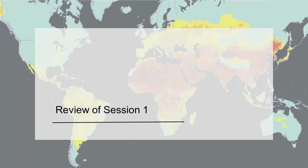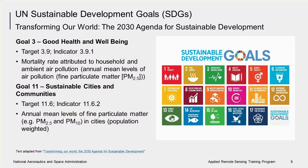First, we'll begin with a brief review of some relevant topics from session one. The Sustainable Development Goals, or SDGs, are an initiative by the United Nations and are part of the UN 2030 Agenda for Sustainable Development, which was adopted in 2015. They contain a set of 17 aspirational global goals and 169 specific targets, covering a broad range of issues. Goal 3 and Goal 11 specifically address the need to reduce air pollution. According to a WHO report, air pollution is responsible for one in every nine deaths, or about 3 million people annually. PM2.5 is most commonly used as an indicator of air pollution exposure — it is particulate matter with an aerodynamic diameter of 2.5 microns or less.